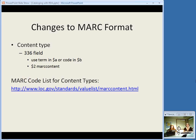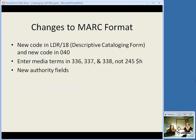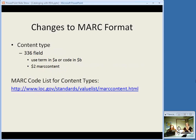There are three new fields for content type, carrier type, and media type. These will be used instead of the GMD in 245 subfield h — we're going to drop subfield h from the 245 and use these new fields instead. Field 336 is for content type — there are terms you can put in subfield a, and machine-readable codes that go in subfield b. Then no matter whether you use subfield a, subfield b, or both, there's a subfield 2 in which you put the source name 'rdacontent.' The website listing all the codes for these content types will be available later so you don't have to write it down.